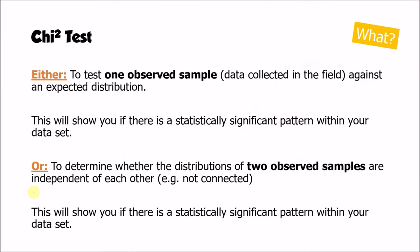I'm going to start by thinking about what we would actually use the chi-squared test for. The first situation is just with one set of data. If we wanted to see whether our observed samples — data collected through fieldwork — showed a pattern, we could compare it to an expected distribution. This would show us if there is a statistically significant pattern within one set of data — for example, whether one bar in a bar chart is significantly higher than another.